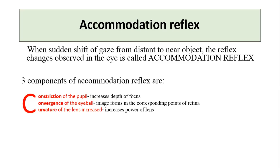Pupillary constriction and convergence of the eyes occur to achieve clear vision of near objects, and the principal change in the lens during Accommodation is seen in the anterior surface of the lens.